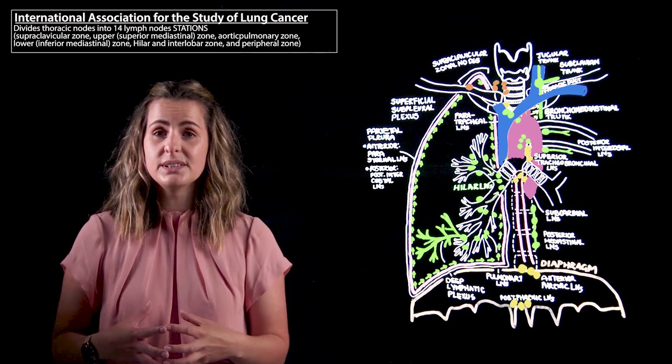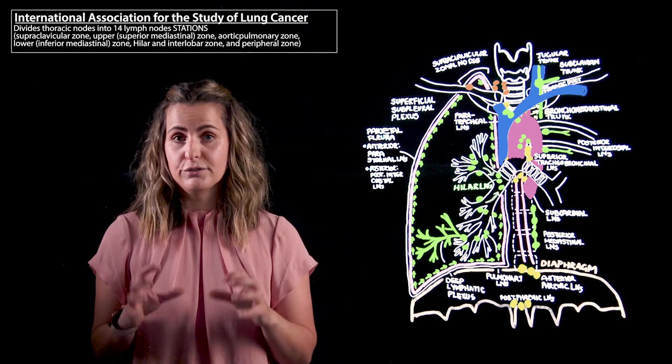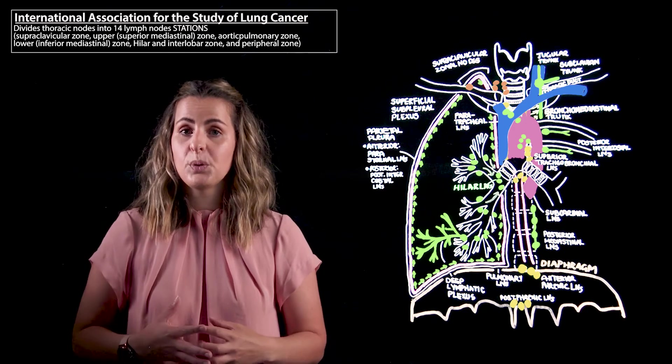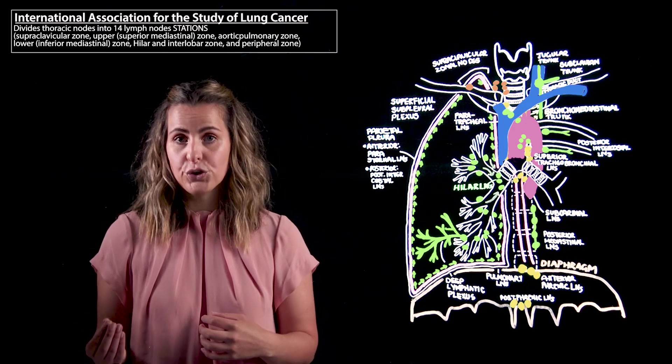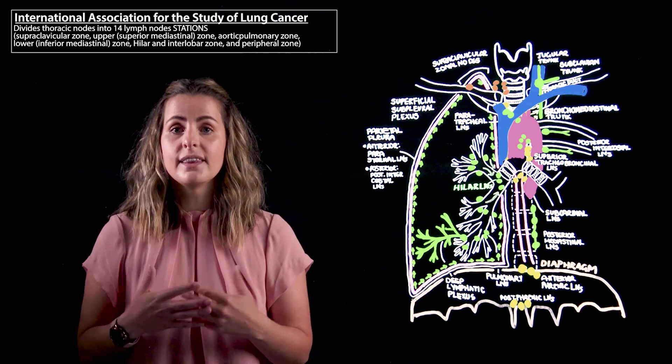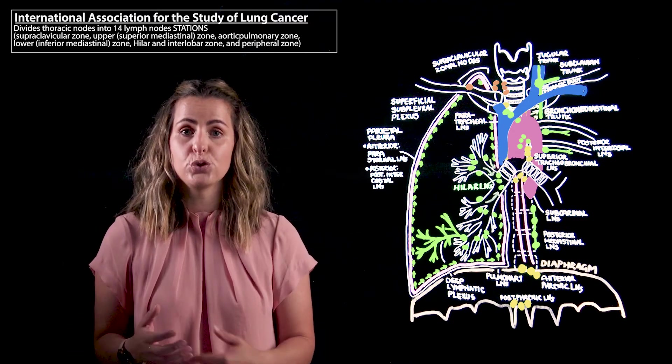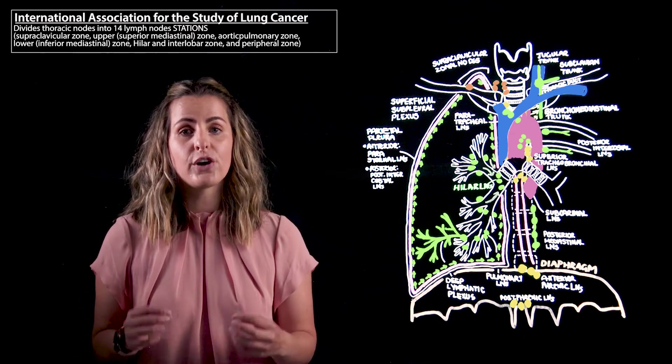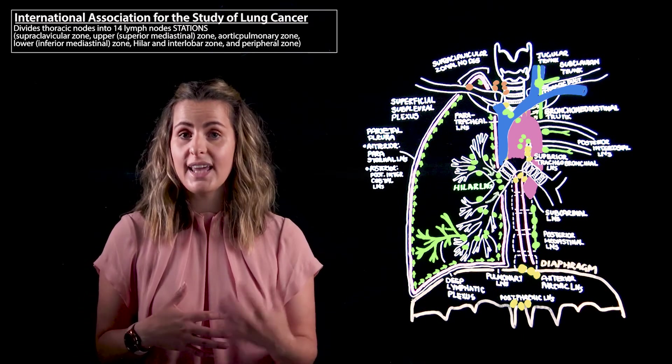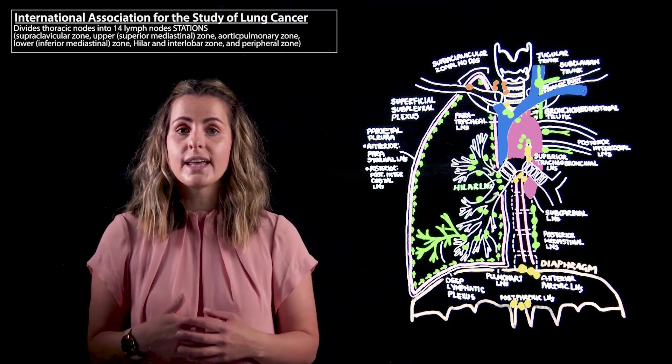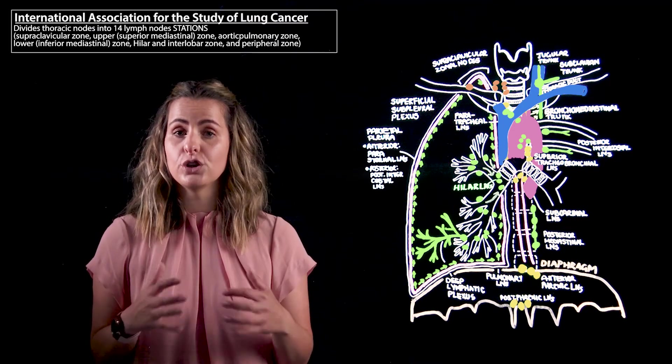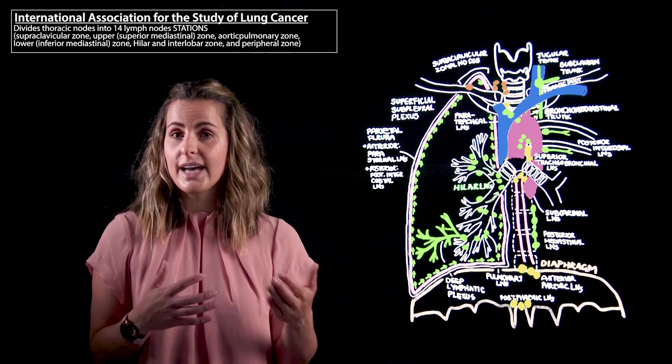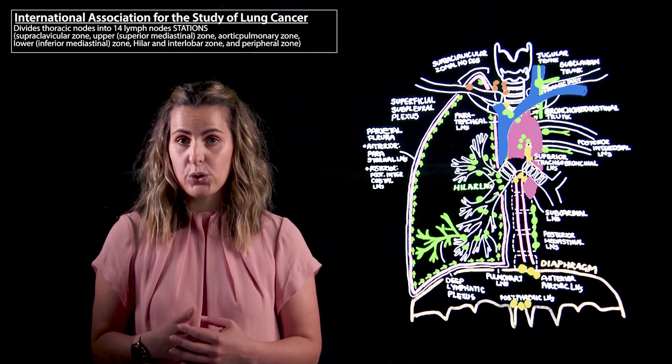The next zone of assessment is going to be the aortic lymph nodes. This is going to be where we find the sub-aortic nodes, which are in the aortopulmonary window and these are situated just lateral to that ligamentum arteriosum. We also have our periaortic, which are also called the ascending aorta nodes, that are located on that upper margin of the aortic arch, just a little bit lateral to the ascending aorta.